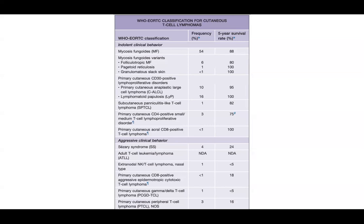Moving to the aggressive entities: Sézary syndrome represents 4% of cases but has only a 24% five-year survival rate. Adult T-cell leukemia/lymphoma data is limited but it is more aggressive. Extranodal NK/T-cell lymphoma nasal type has less than 5% survival. Primary cutaneous CD8-positive aggressive epidermotropic cytotoxic T-cell lymphoma represents less than 1% of cases with an 18% five-year survival. Primary cutaneous gamma-delta T-cell lymphoma has less than 5% survival over five years. Primary cutaneous peripheral T-cell lymphoma NOS is a catch-all representing approximately 3% with an equally low survival rate of 16%.